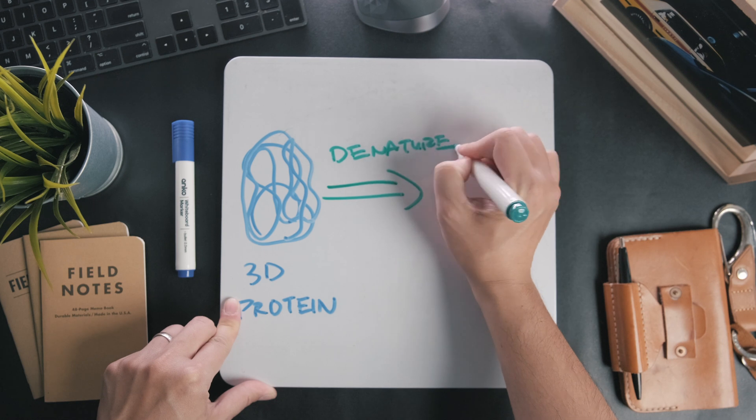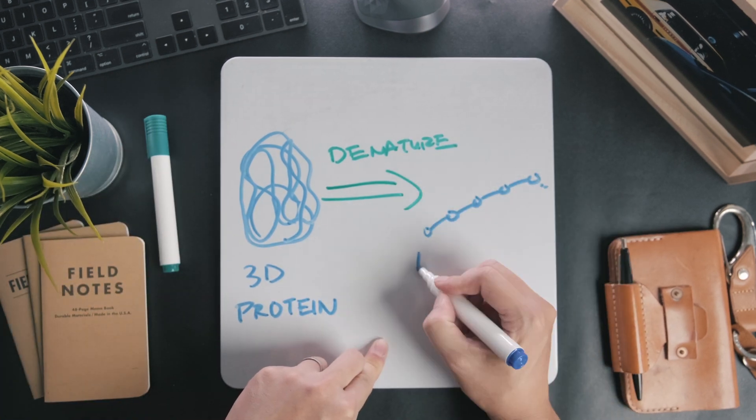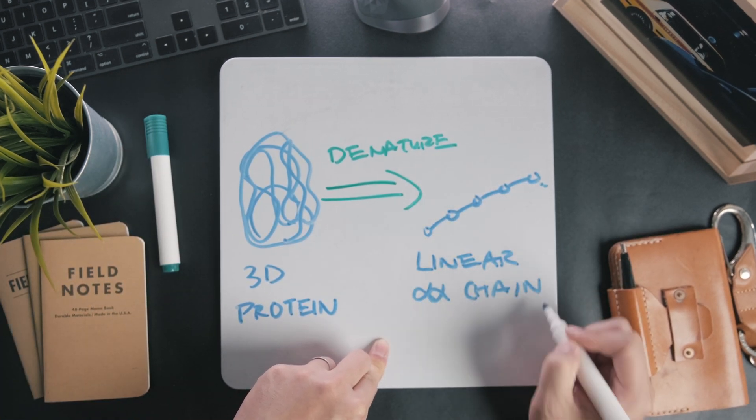The process involves denaturing or unraveling the protein into a linear string of amino acids and applying an electrical charge across them. The SDS applies a negative charge to the proteins, so they naturally migrate towards the positive anode.